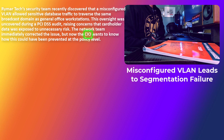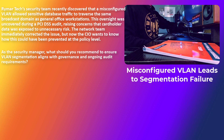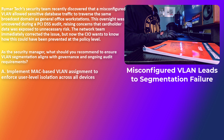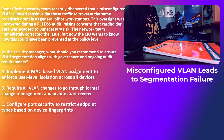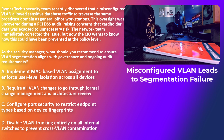So as the security manager — otherwise known as the CISSP — what should you recommend to ensure VLAN segmentation aligns with governance and ongoing audit requirements? Choice A: implement MAC-based VLAN assignment to enforce user-level isolation across all devices. Choice B: require all VLAN changes to go through formal change management and architecture review. Choice C: configure port security to restrict endpoint types based on device fingerprints. Choice D: disable VLAN trunking entirely on all internal switches to prevent cross-VLAN contamination.